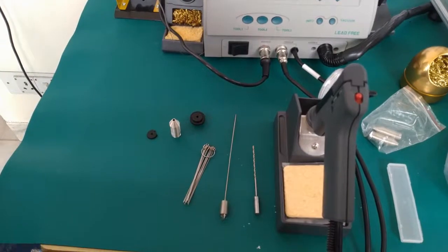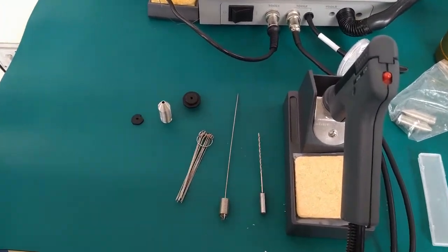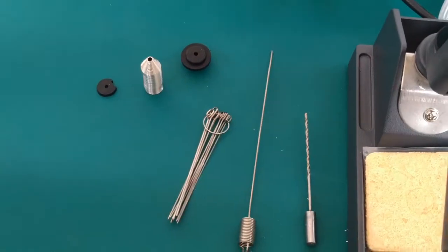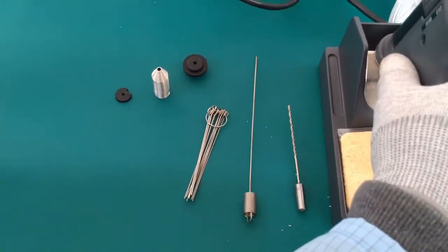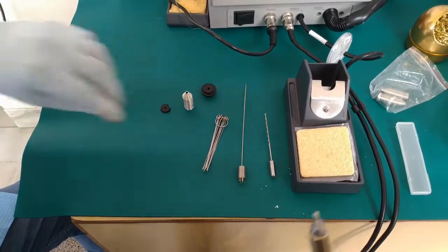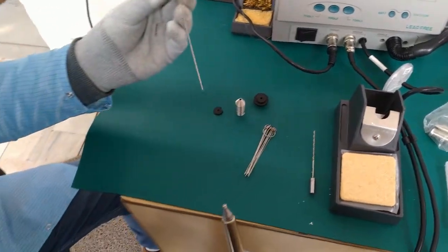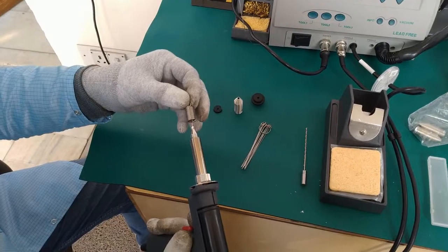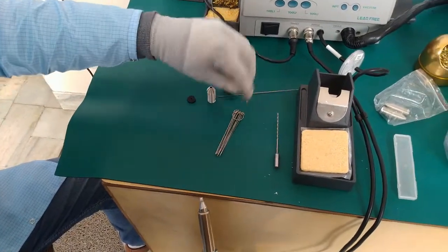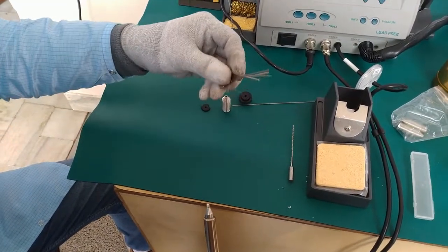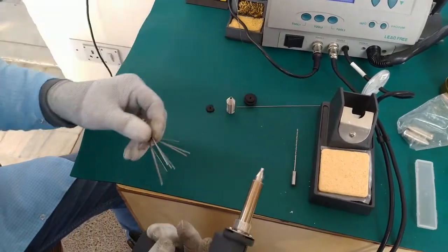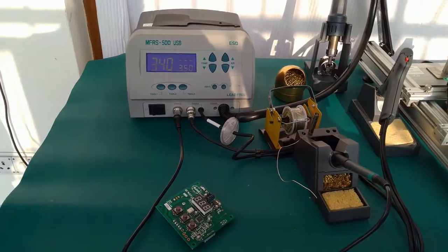A few spares are also provided along with the desoldering iron. These spares can be used when the holder ones are to be replaced. Now we will show you how to clean the desoldering nozzle. Choose the cleaning pin according to the internal diameter of the desoldering nozzle, insert it inside the nozzle, and pull it back.